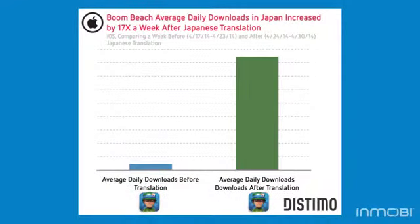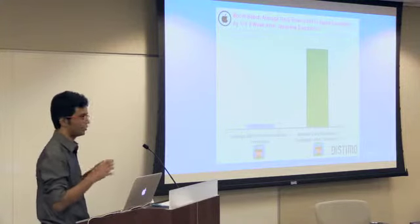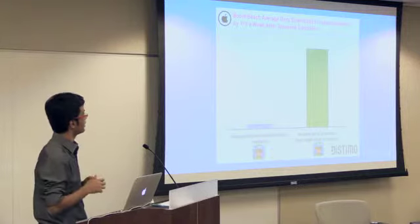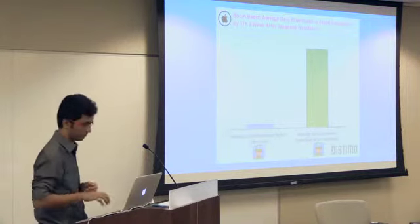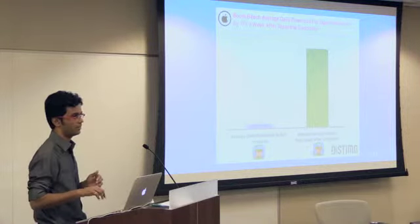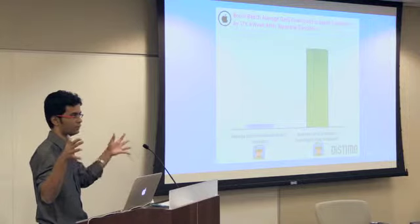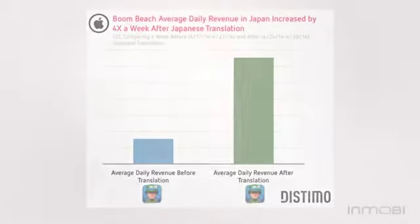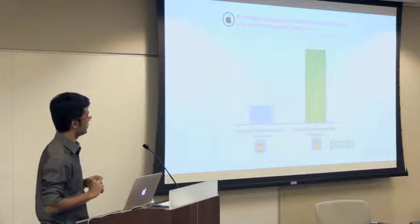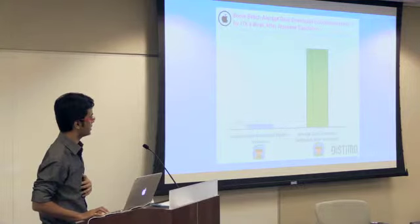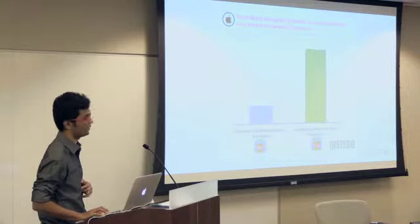Another Supercell game, Boom Beach, did a translation to Japanese. In the week they went live with it, they saw a 17x increase in downloads from that region compared to their English version. That's a huge number — it tells you the scale of opportunity if you invest time in localizing your app. That also resulted in four times the revenue. Boom Beach initially did only translation, not full localization, which is why you see 17x increase in downloads but only 4x increase in revenue.